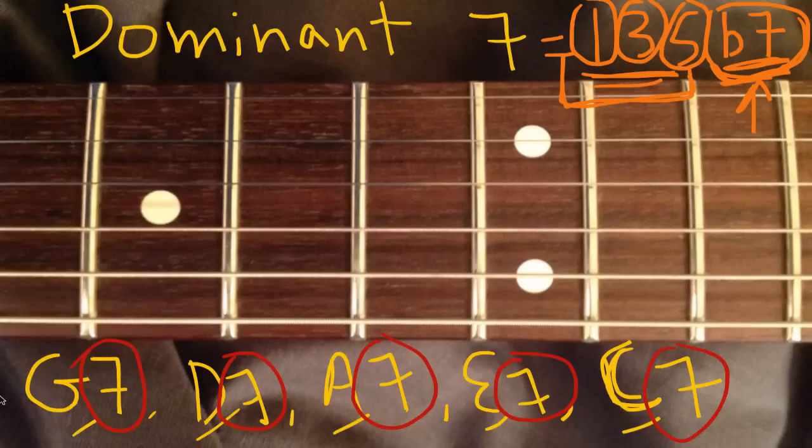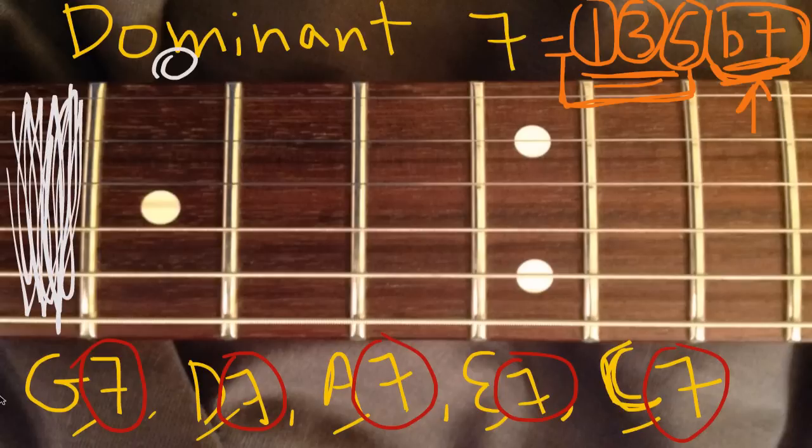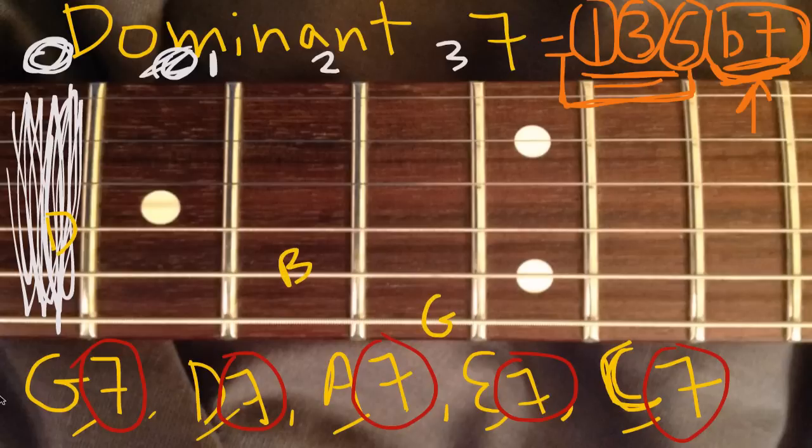So let me draw out an example. I'm going to use G major again. Pretend this is the nut. Here's zero, here's the first fret, two, three. So a G chord looks like this. It has G, B, D, G, B, G. Most people know that. Some people like to play it with D right here. I'm not going to talk about that version of it.